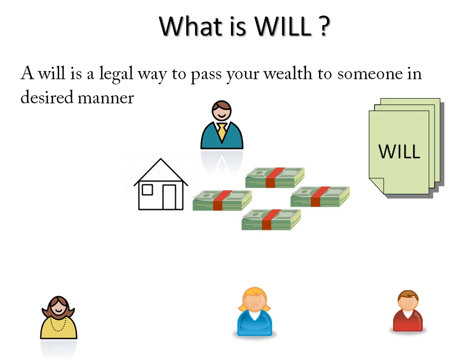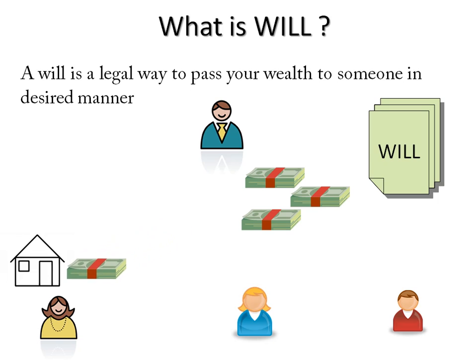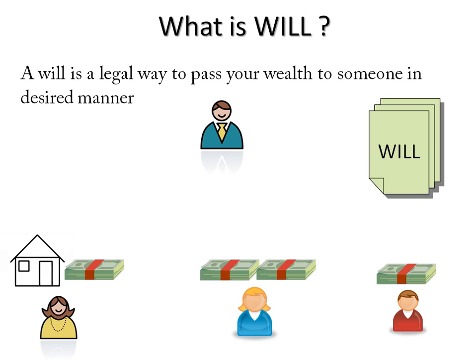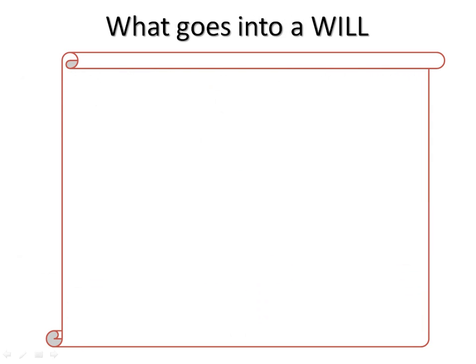Through a will, he wants to pass on this wealth to all three people in a desired manner. He can write in a will that he wants to pass his house to his wife, 25% of the money to his wife, 50% of the cash in the savings bank account to his daughter, and the rest of the money to his son. After his death, when the will is executed, the wealth will be passed in the same manner.